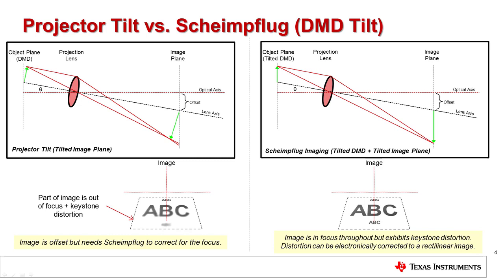One thing to note about the Scheimflug principle is that it is not commonly used in projection. Since the projection throw distance can vary depending on use case, the magnification of the projected image changes. The Scheimflug principle works for a fixed throw distance only, since the DMD must be tilted by the inverse of the magnification of the image. If the magnification varies, then the DMD tilt must also vary, which would require expensive moving mechanical parts and is not recommended. For a smart speaker application with a fixed projection distance, this technique becomes feasible, providing several advantages to cost savings and size reduction.